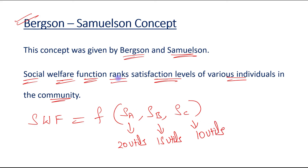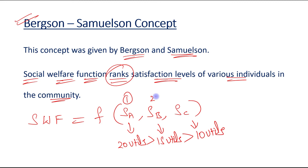The social welfare function ranks the satisfaction levels of various individuals in the community. For example, we can say that the satisfaction level of Individual A is greater than that of Individual B, which is greater than that of Individual C. So rank 1 goes to A, rank 2 to B, and rank 3 to C, because Individual A is getting the maximum satisfaction.